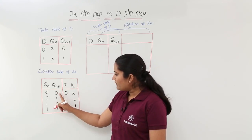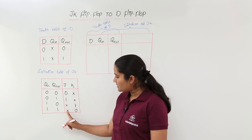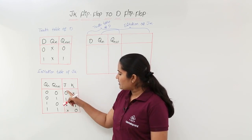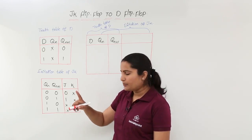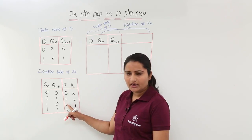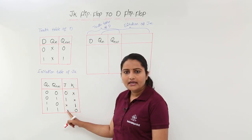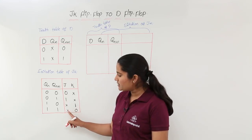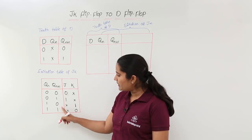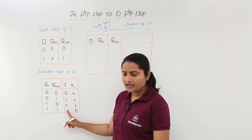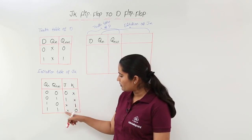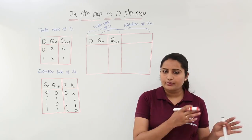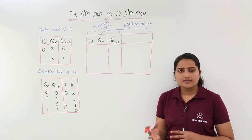For J, write Q(n+1) values same as the combination, except the last two bits which are don't care. The reverse of this gives K. In case of SR flip-flop, maintain Q(n+1) in place of S and only the last entry is don't care; its reverse gives R. For JK, the last two places are don't care, and the reverse — don't care, don't care, 1, 0 — gives K.